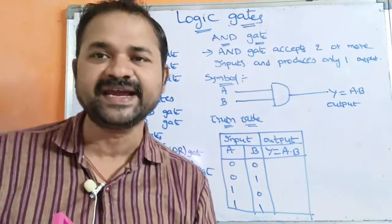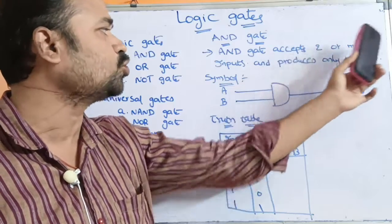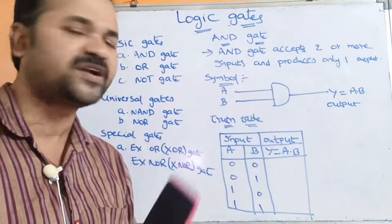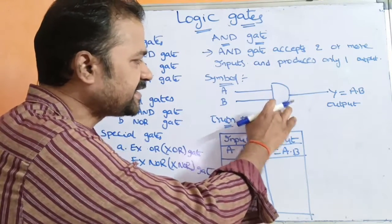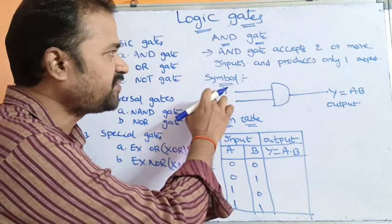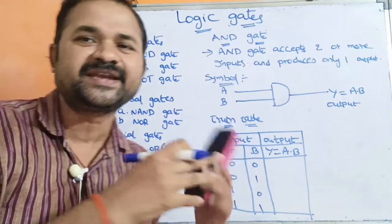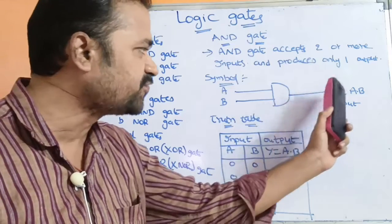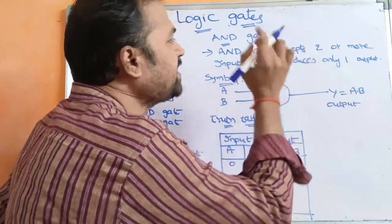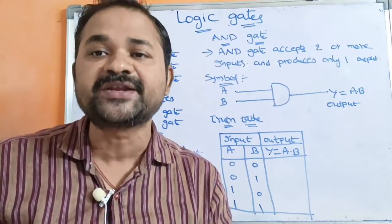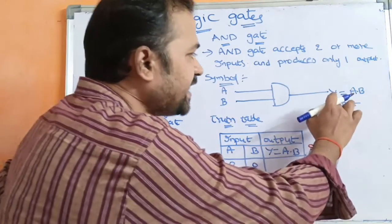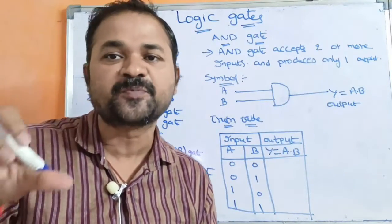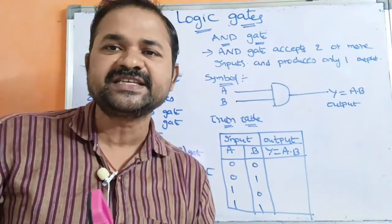So what is the first basic gate? AND gate. AND gate accepts two or more inputs and it produces only one output. This is the symbol for the AND gate. AND gate accepts two input symbols — the first input is A and the second input is B. It can accept two or more inputs, but in this diagram we have taken two inputs. AND gate simply performs the product operation on the inputs, so we can write the output Y is equal to A dot B.